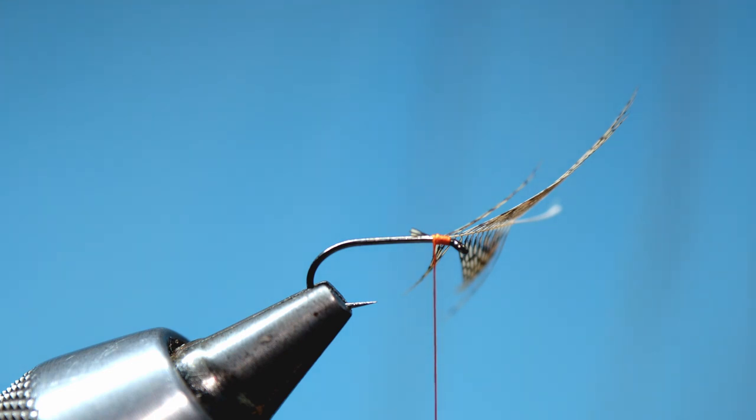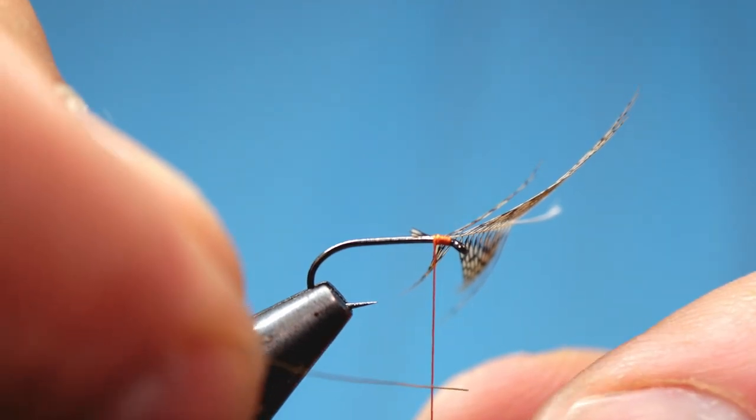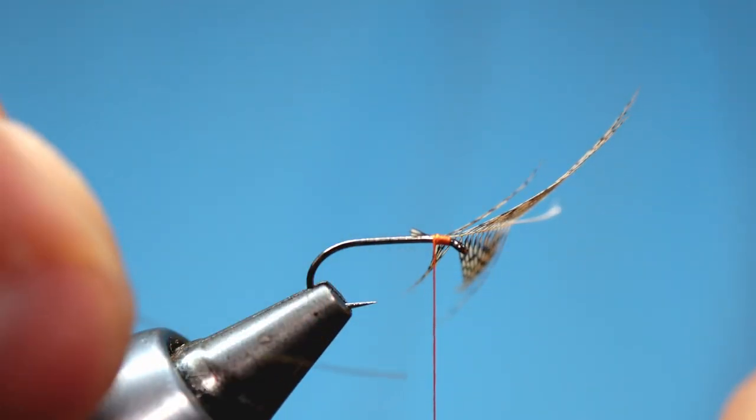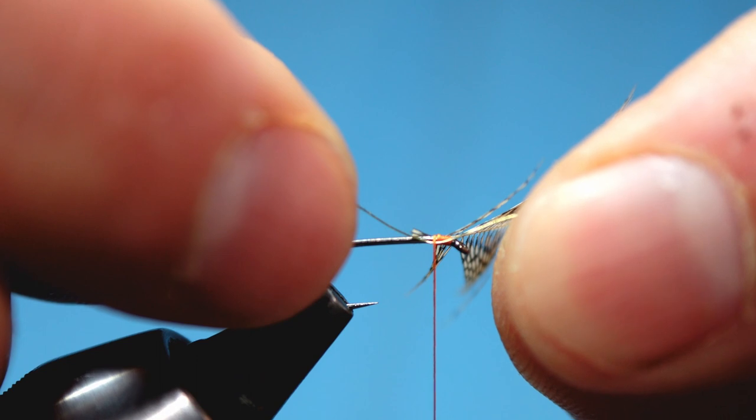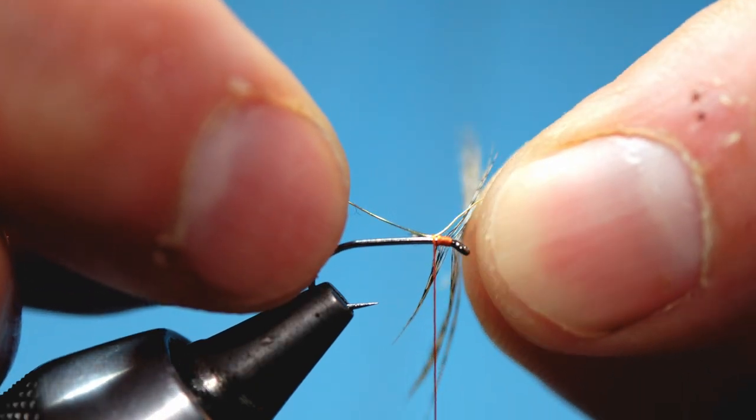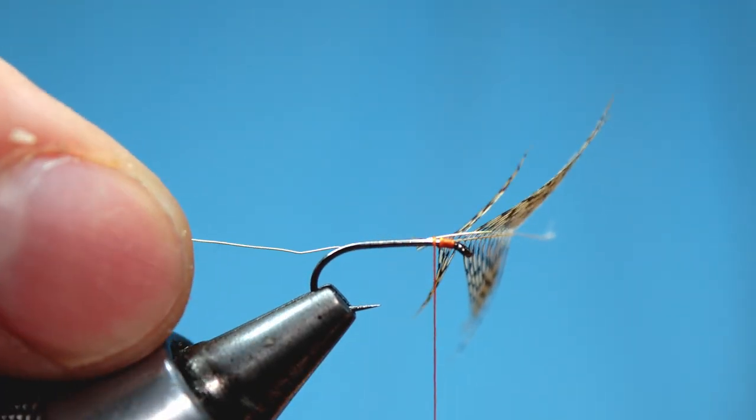Now for the rib we're going to use a fine gold wire. To mount the wire we bring it underneath the silk and just trap it down.